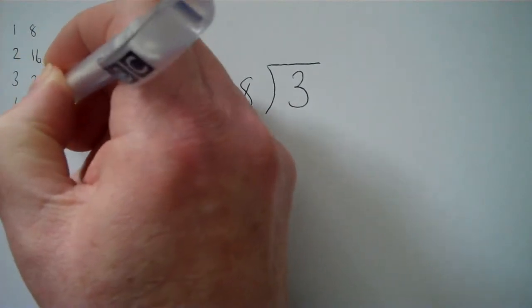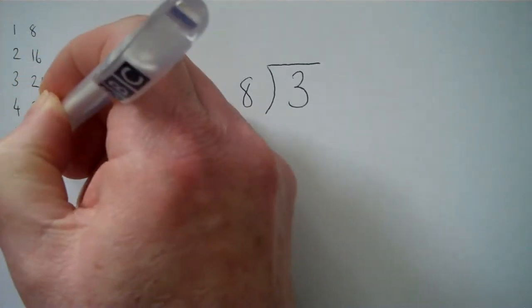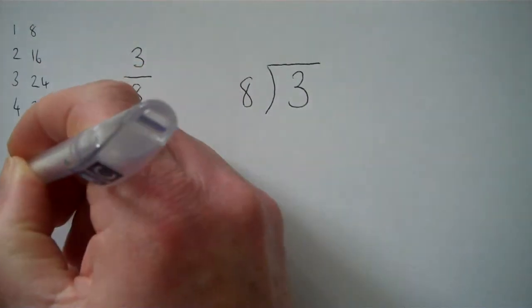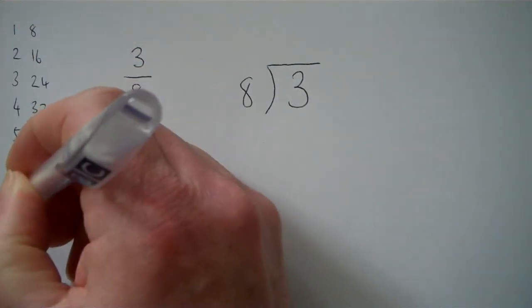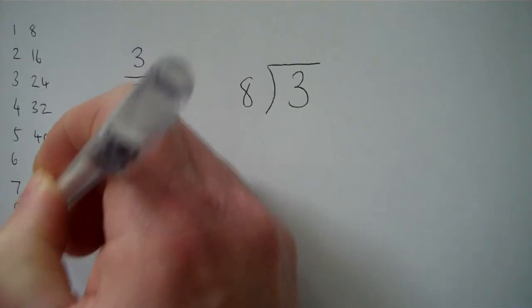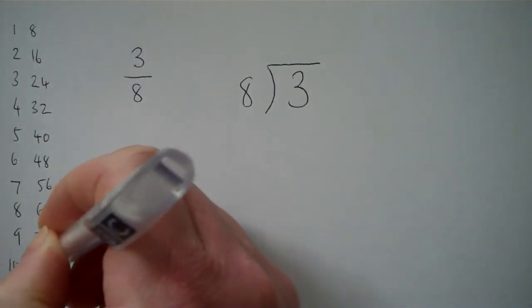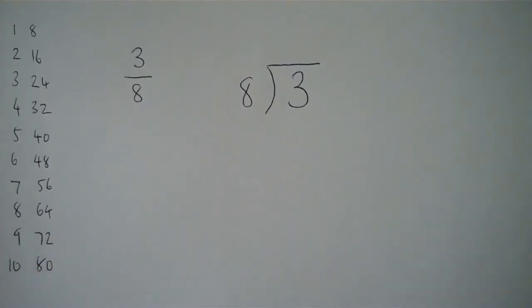4 eights are 32, 5 eights are 40, 6 eights are 48, 7 eights are 56, 8 eights are 64, 9 eights are 72, 10 eights are 80, just to remind us if we need to refer to it.